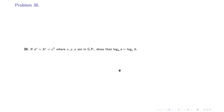Problem 30 (final problem): If aˣ = bʸ = cᶻ and x, y, z are in GP, prove that log_b(a) = log_c(b). We set aˣ = bʸ = cᶻ = k and take logarithms to get x·log a = y·log b = z·log c = log k, so x = log k / log a, y = log k / log b, z = log k / log c.